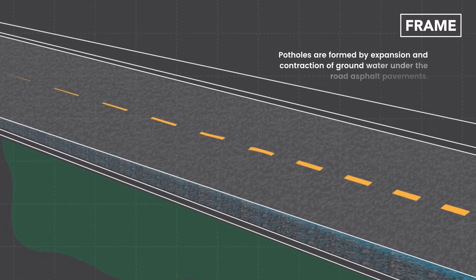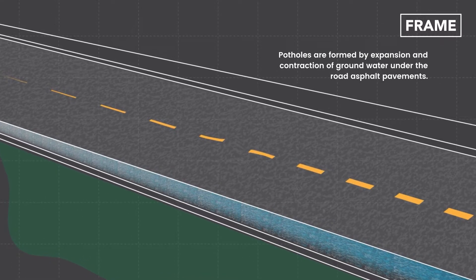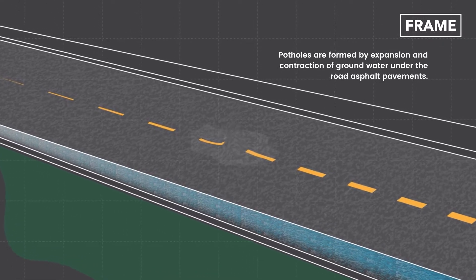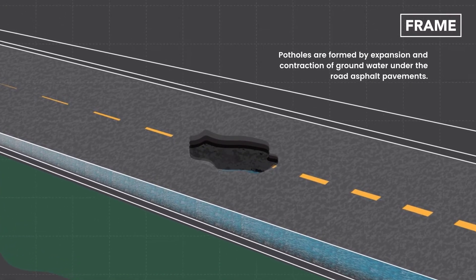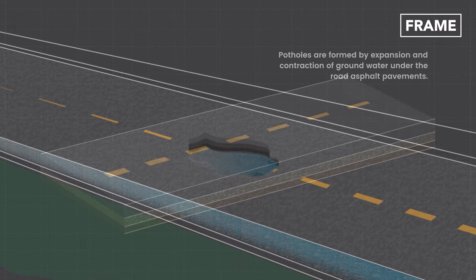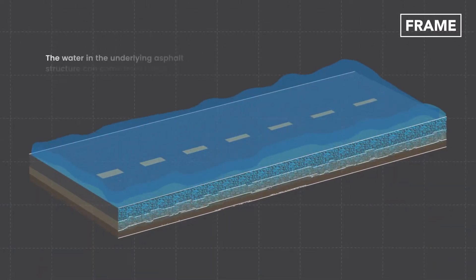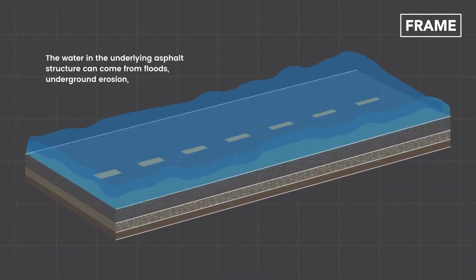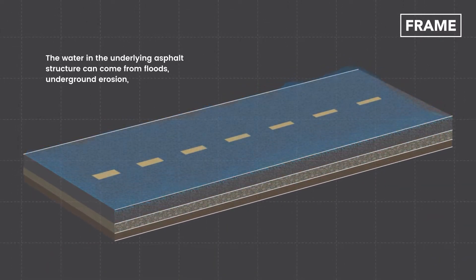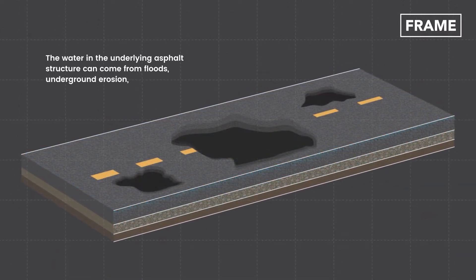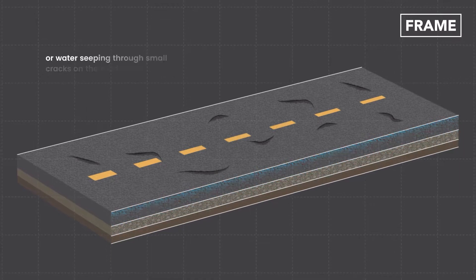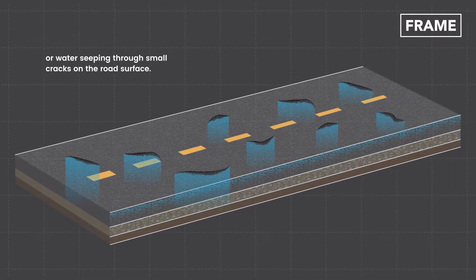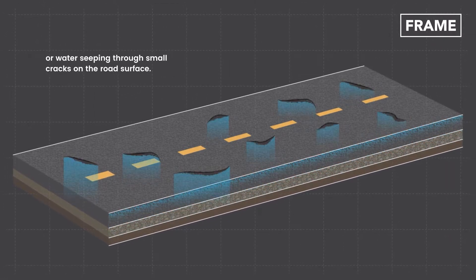Potholes are formed by expansion and contraction of groundwater under the road asphalt pavements. The water in the underlying asphalt structure can come from floods, underground erosion, or water seeping through small cracks on the road's surface.